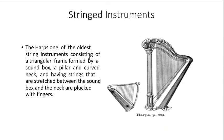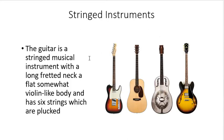Another string instrument is the harp. The harp is one of the oldest string instruments, consisting of a triangular-framed, firm-based sound box, a pillar and curved neck, and strings that are stretched between the sound box and neck and plucked with fingers.